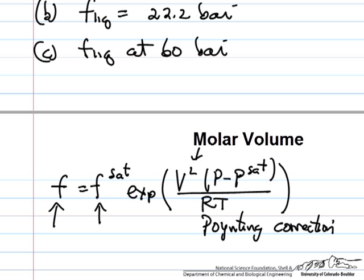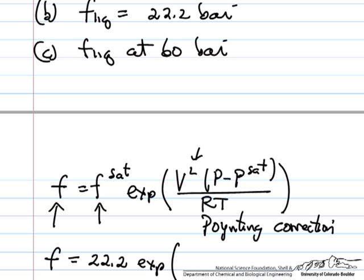This is the volume of the liquid, molar volume, pressure difference over RT. So the fugacity at 60 bar is going to be 22.2, and then the exponent, and I'll substitute the numbers in.